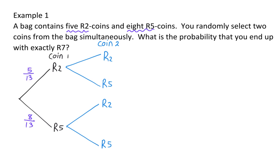A branch should always add up to a probability of 1, and 5 over 13 plus 8 over 13 is 13 over 13, which is 1. When you remove objects simultaneously, the probability works exactly the same as not replacing the first object. If the first coin was a two-rand coin, we now only have four two-rand coins left. So to draw another two-rand coin for the second coin, we have four out of the remaining twelve left. For the five-rand, out of the twelve, there are still eight to remove.